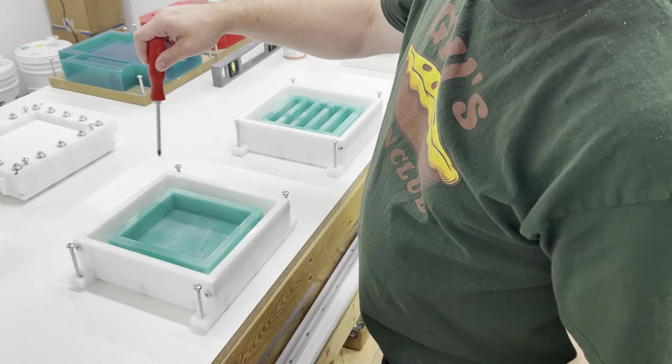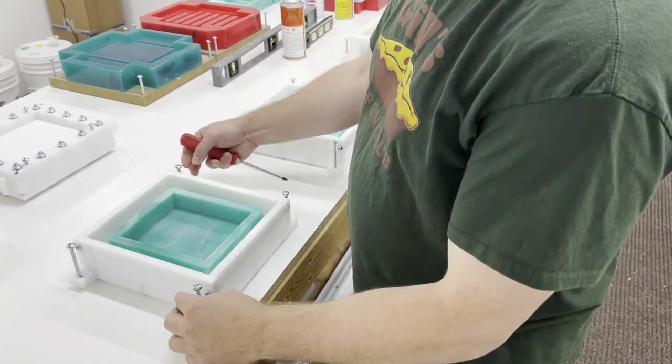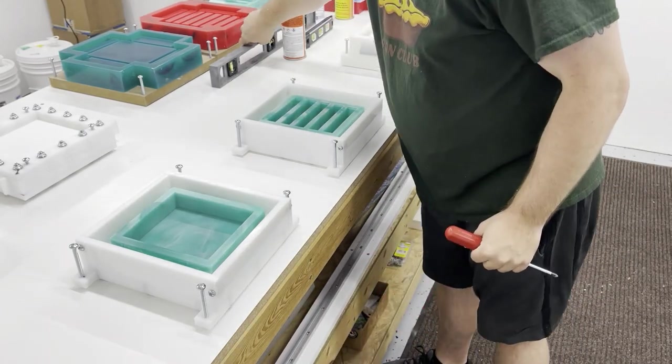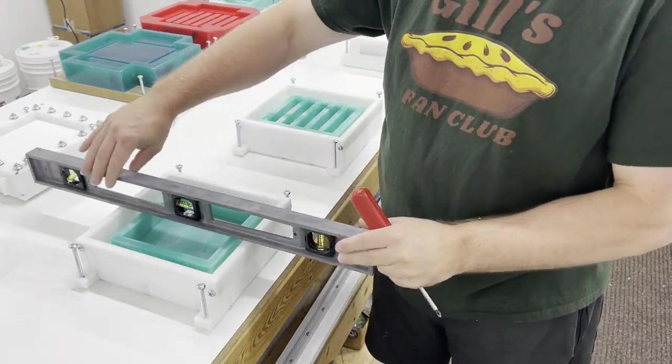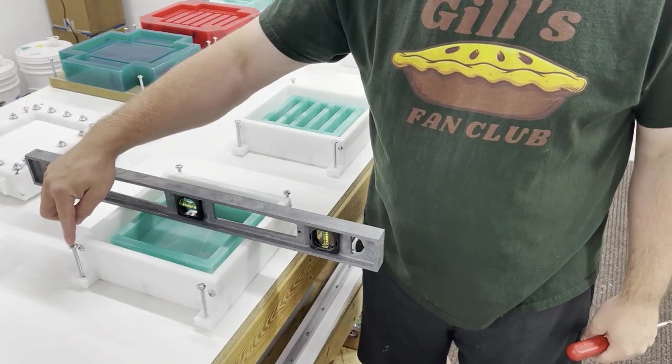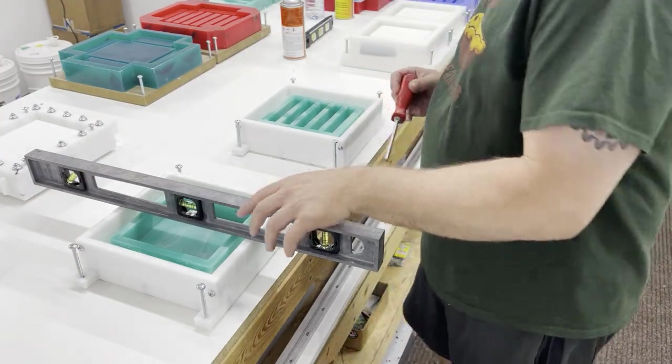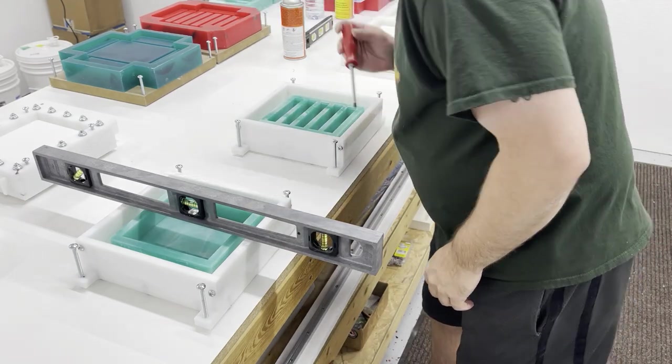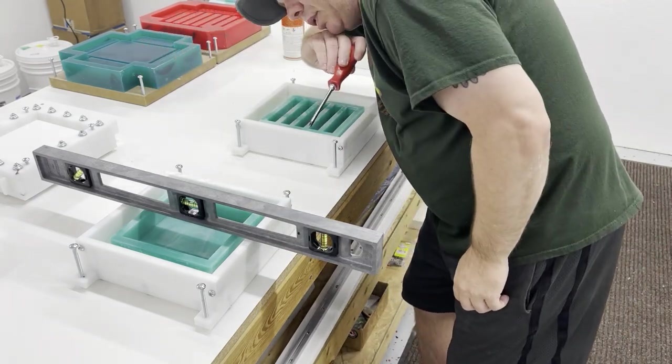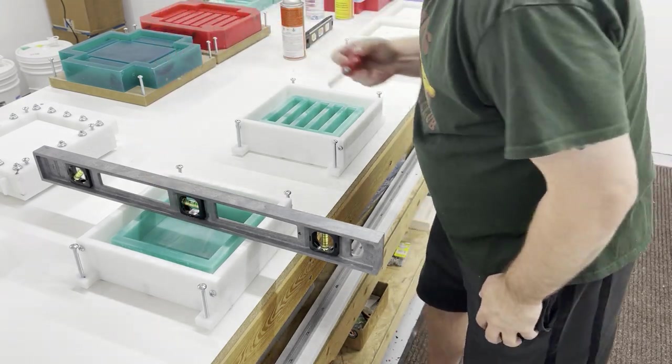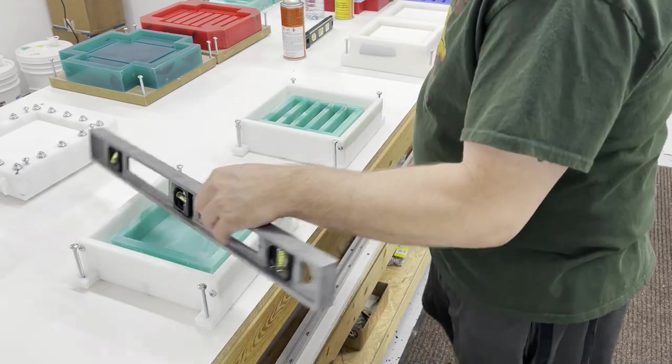One thing is very important before we start: you see these screws sticking up? These are all adjusters so we can level this. I just tap and thread the HDPE, and this is a quarter by 20 bolt, pretty easy. You just kind of chase it around till you're satisfied.